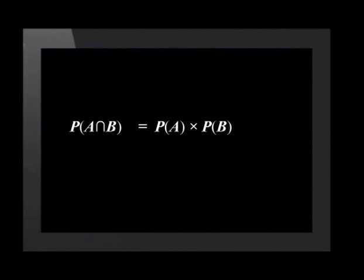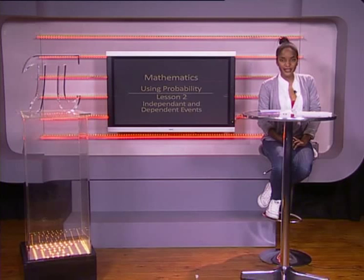Now you should be able to identify independent events and use the product rule to work out the probability for independent events. You can also determine if events are independent by using the converse of the product rule: if the probability of A times the probability of B is equal to the probability of A intersection B, then A and B are independent events.